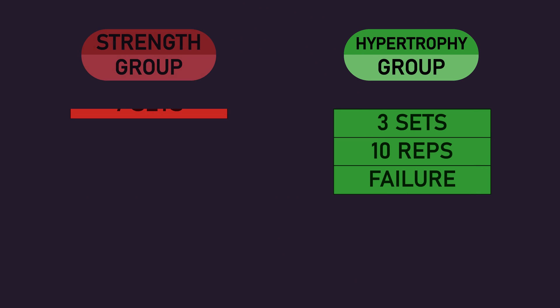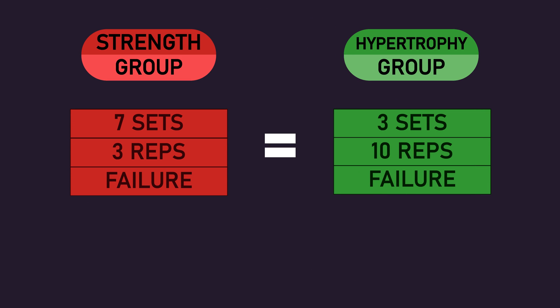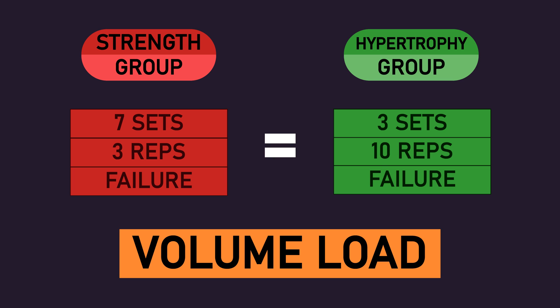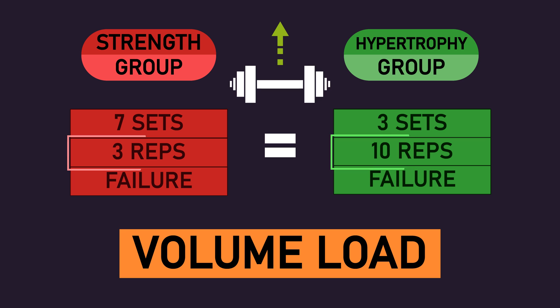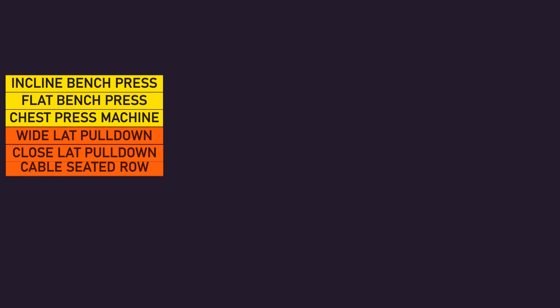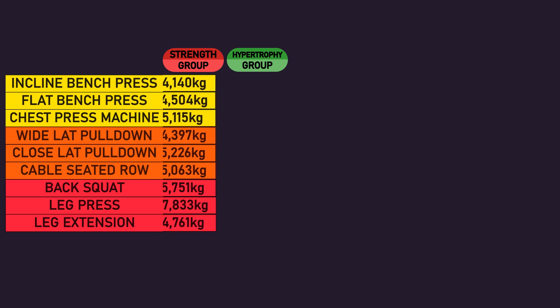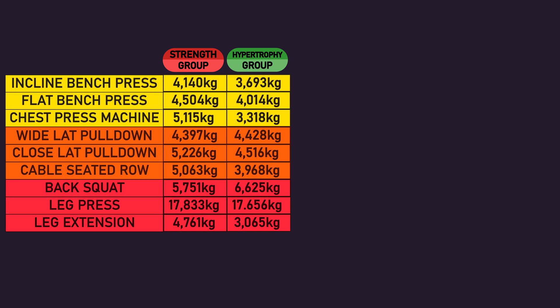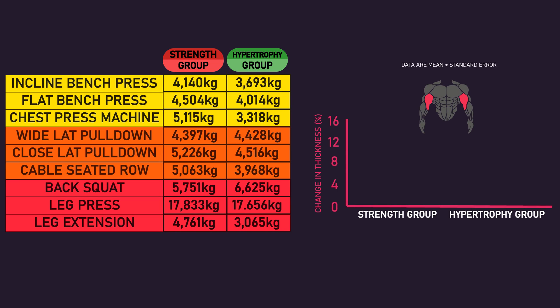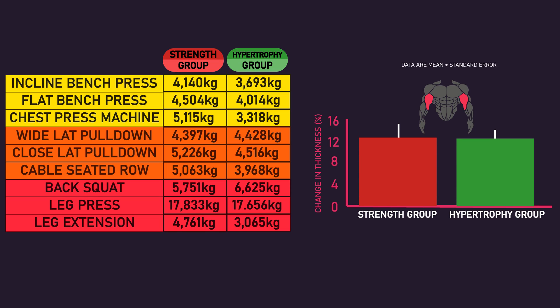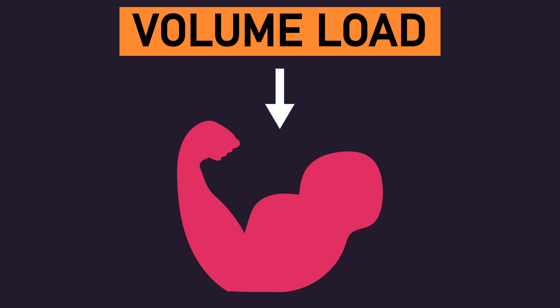The reason the strength group performed more sets per exercise was to equate the volume load between both groups. Both groups attempted to increase the load they used within their rep range every week. After 8 weeks of training, the total volume load performed in each exercise was similar between both groups. Moreover, increases in a biceps growth measurement were similar between both groups. Therefore, given volume load was similar between both groups and both groups seem to have experienced similar hypertrophy, you may think volume load may be driving hypertrophy.